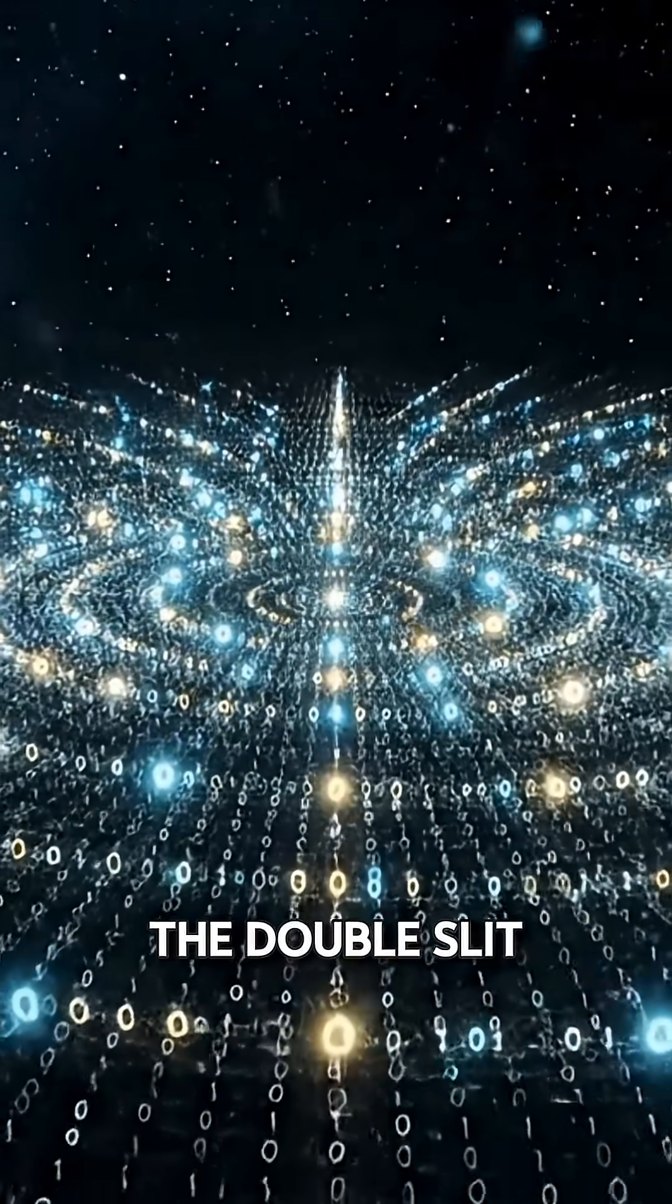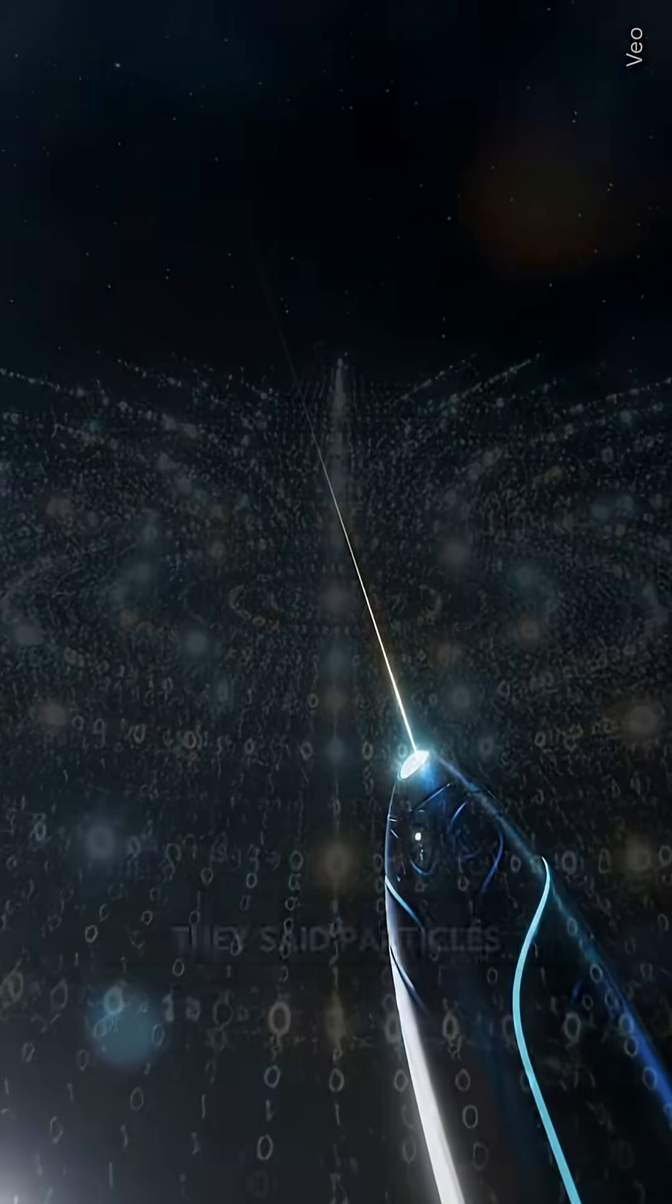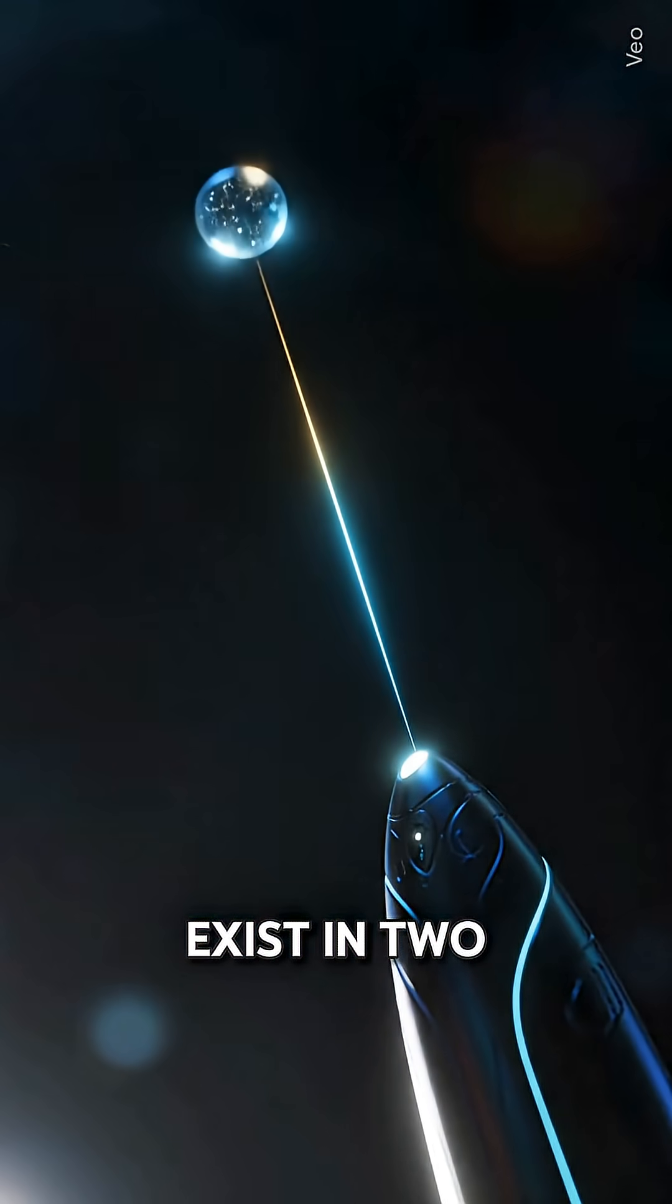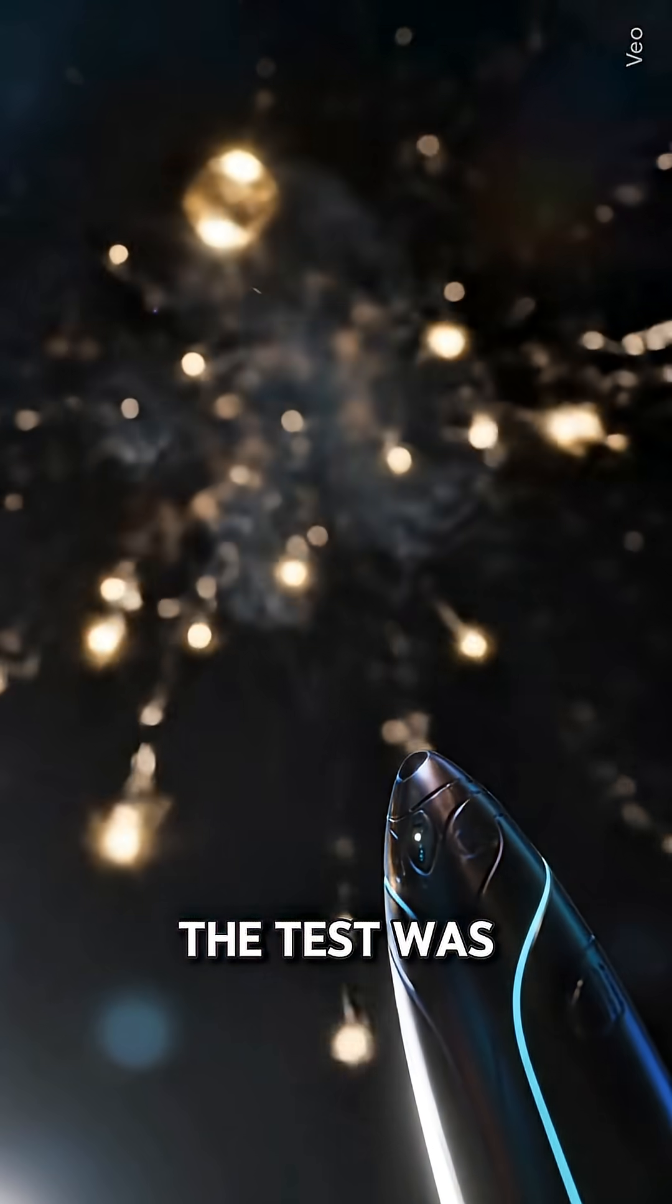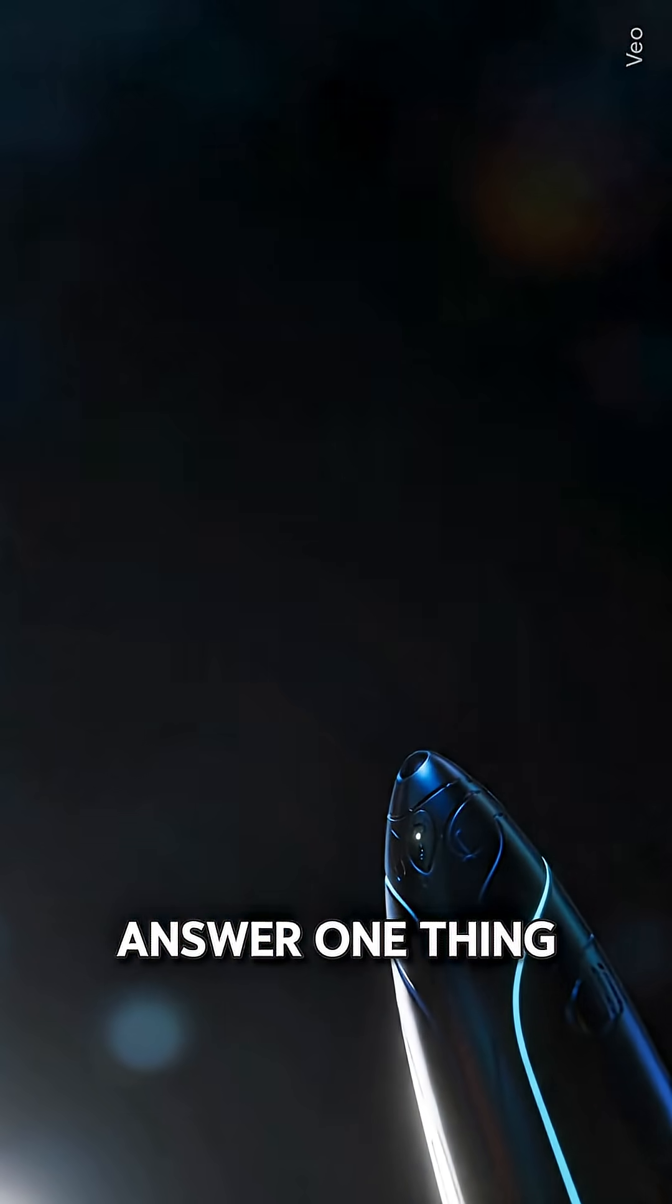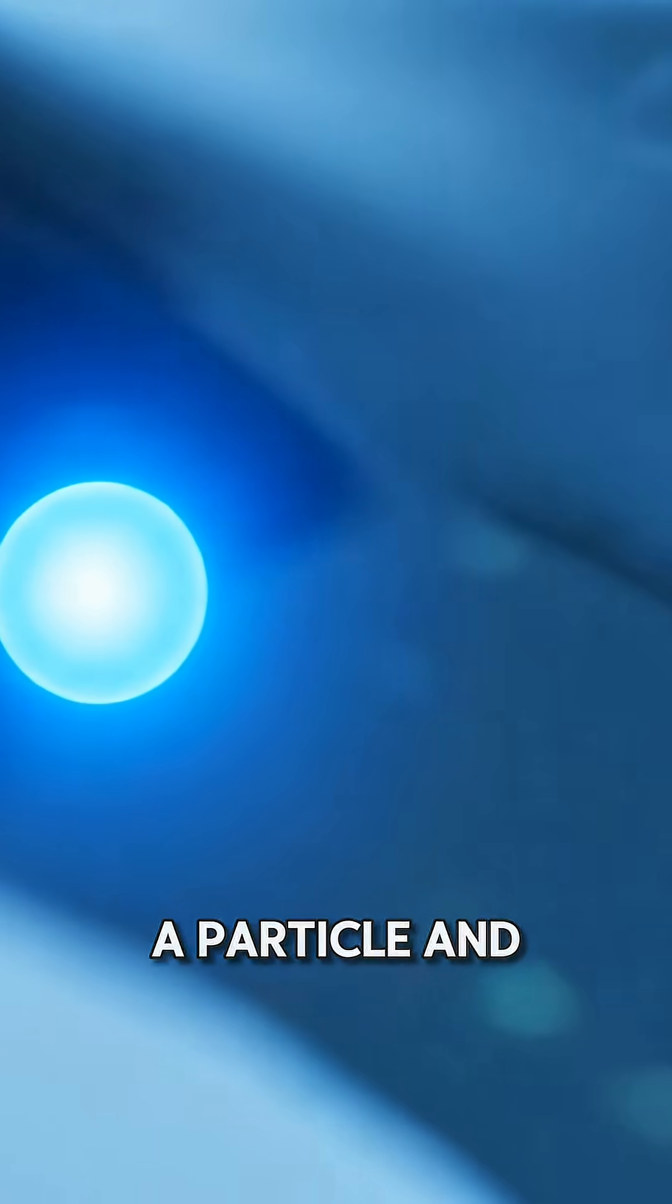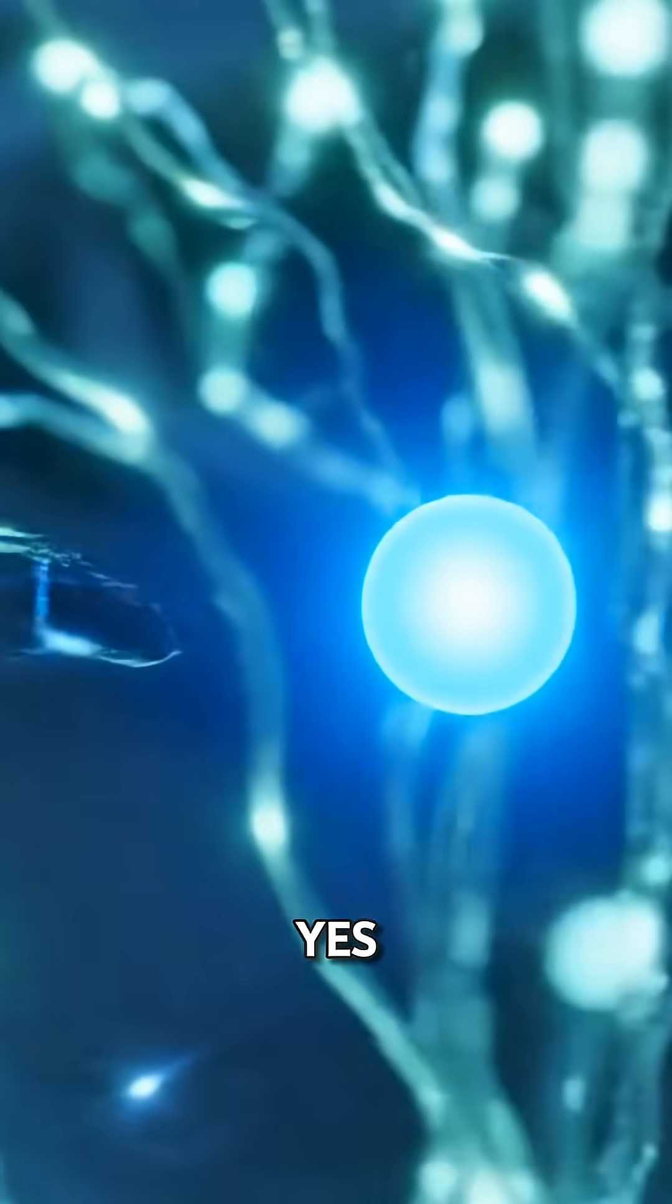And then came the double-slit experiment. They said particles exist in two places at once. But that's wrong. The test was only meant to answer one thing. Is the photon a particle? And the answer was yes.